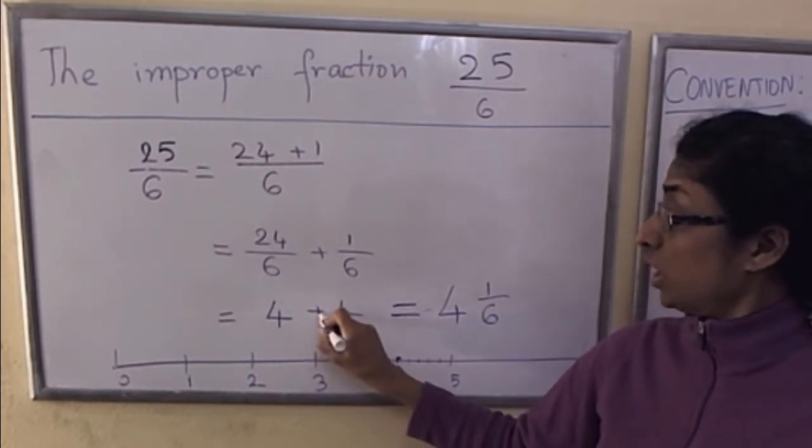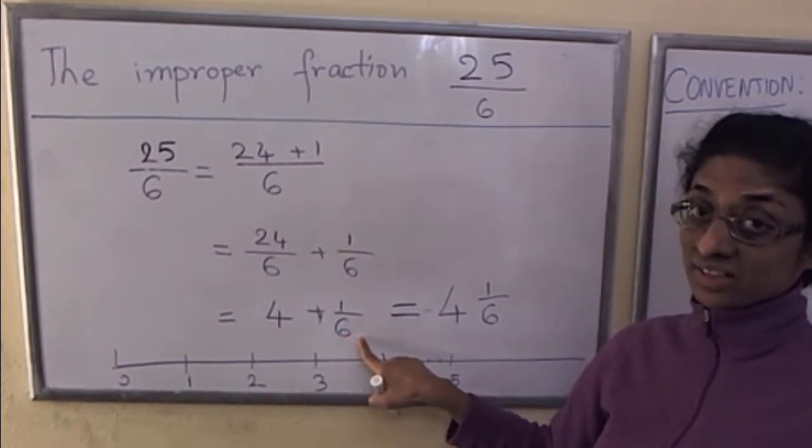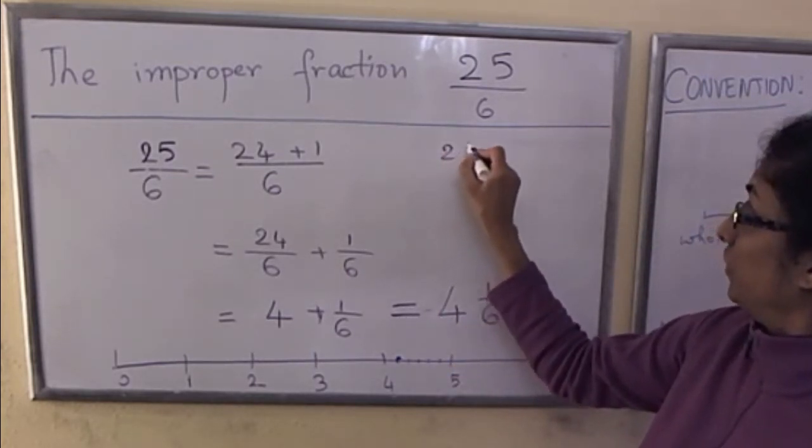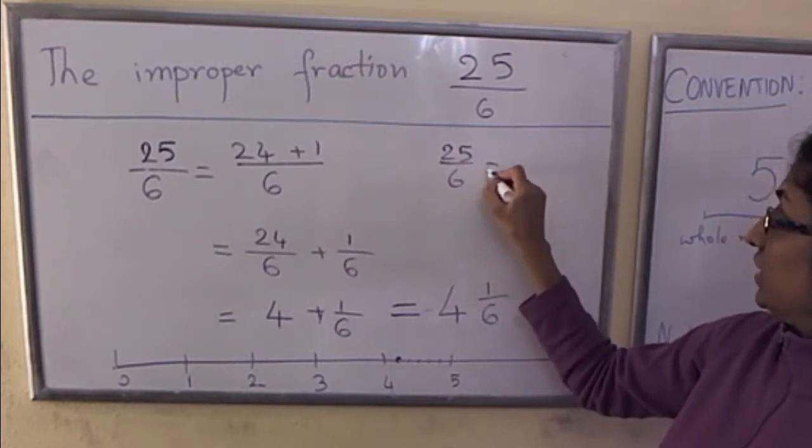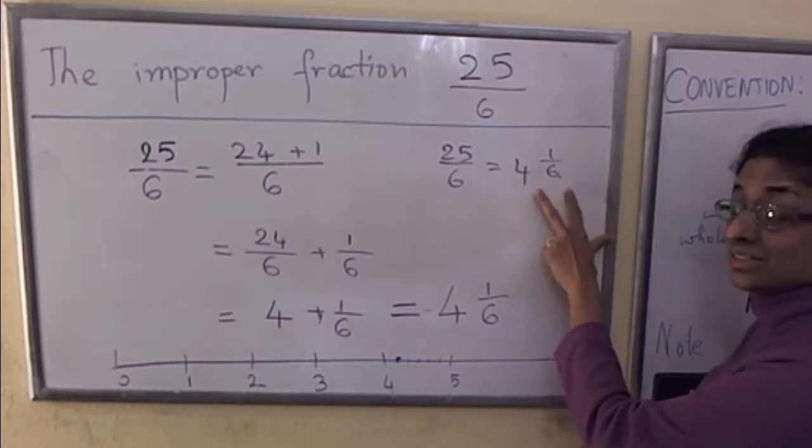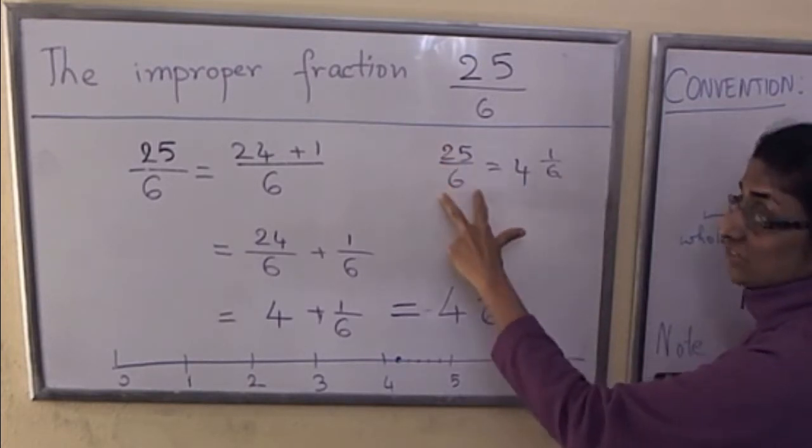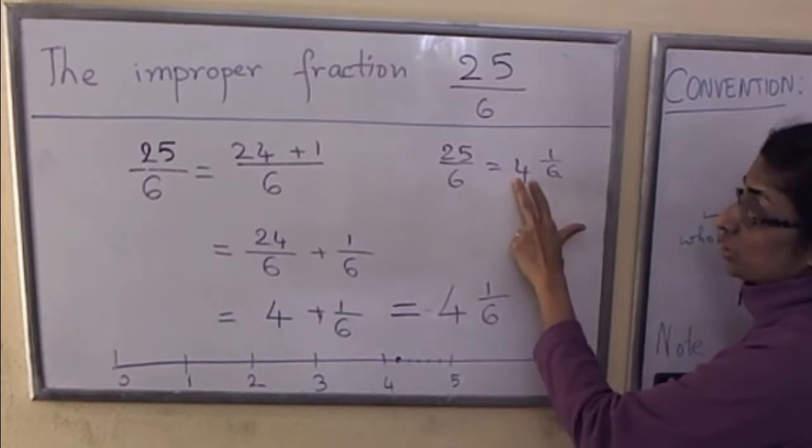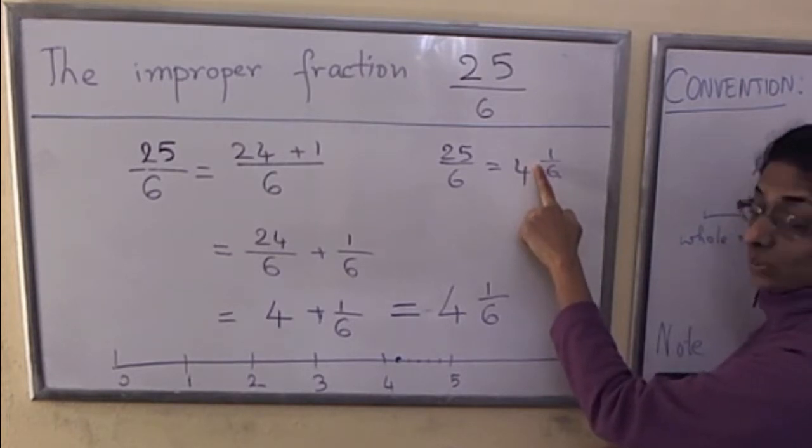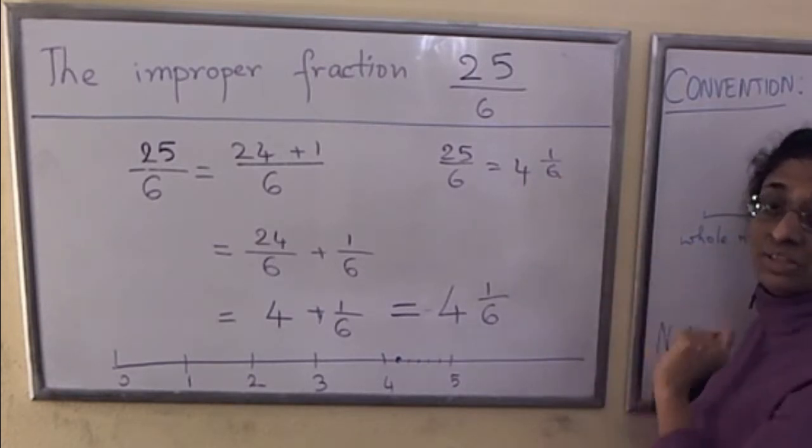I can simply choose not to write this plus because here what I have is a whole number plus a proper fraction. By convention, I can remove it and write it this way. So when we see 25 over 6 as 4 1/6, a whole number and a proper fraction, this form is easier for visualizing where exactly this point is on the number line. We can visualize 4 and then a proper fraction, so we don't quite get to 5 but 4 and a little bit more.